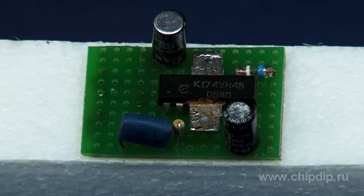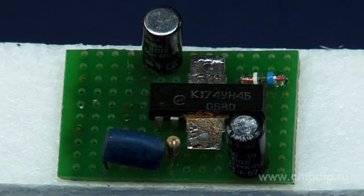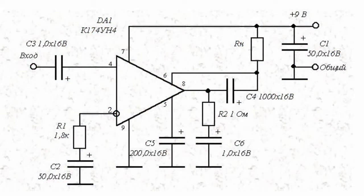K174UN4 is a low-frequency power amplifier, producing output power up to 1 Watt with a load of 4 Ohms. This chip is used in household self-powered radio equipment as it has very low current consumption. You can also use K174UN4 as a direct current voltage regulator that will provide load current amplitude of up to 0.8 Amperes.